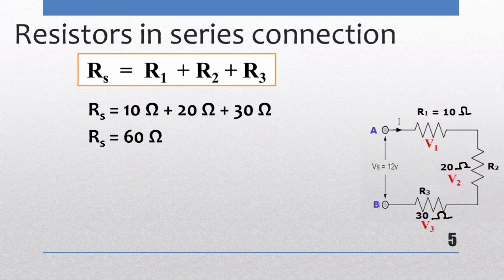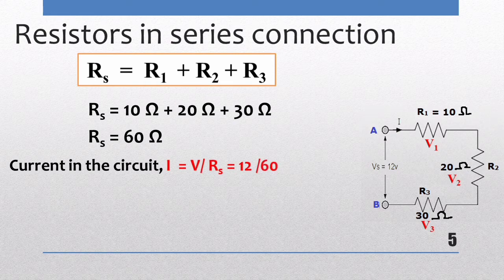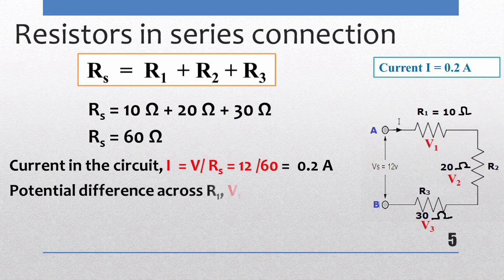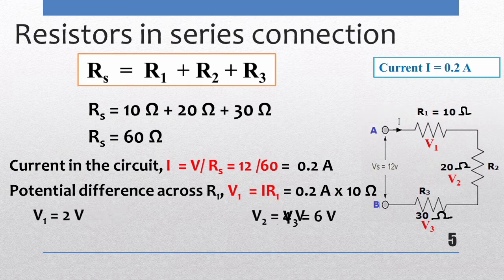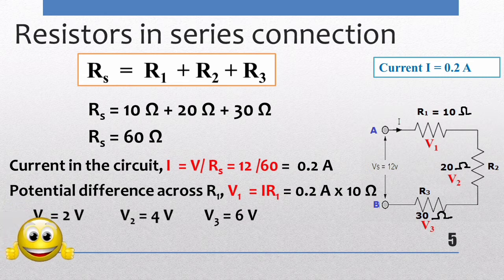To find the potential difference across each resistor, we first find the current: I = V divided by the total equivalent resistance, giving 0.2 A. Using Ohm's law, V1 = IR1 = 2 V, V2 = 4 V, and V3 = 6 V. We can verify by adding V1 + V2 + V3 and checking against the total voltage given in the diagram.